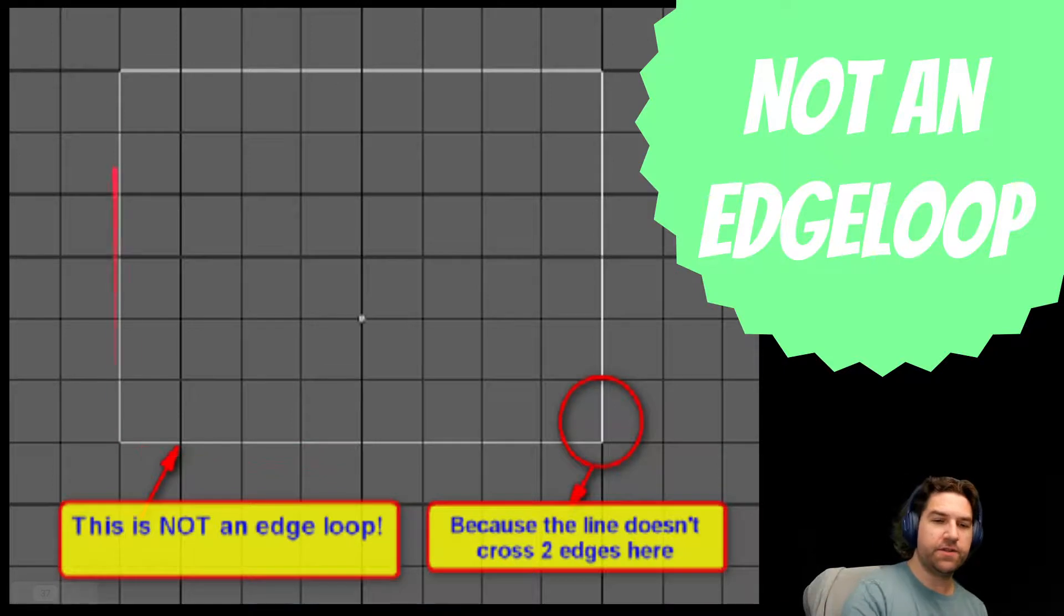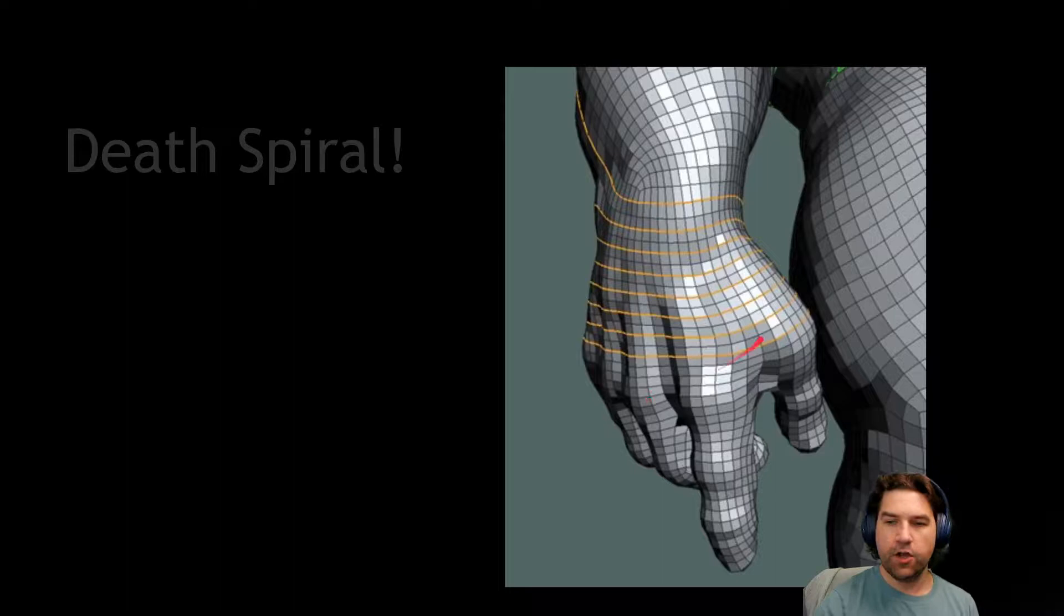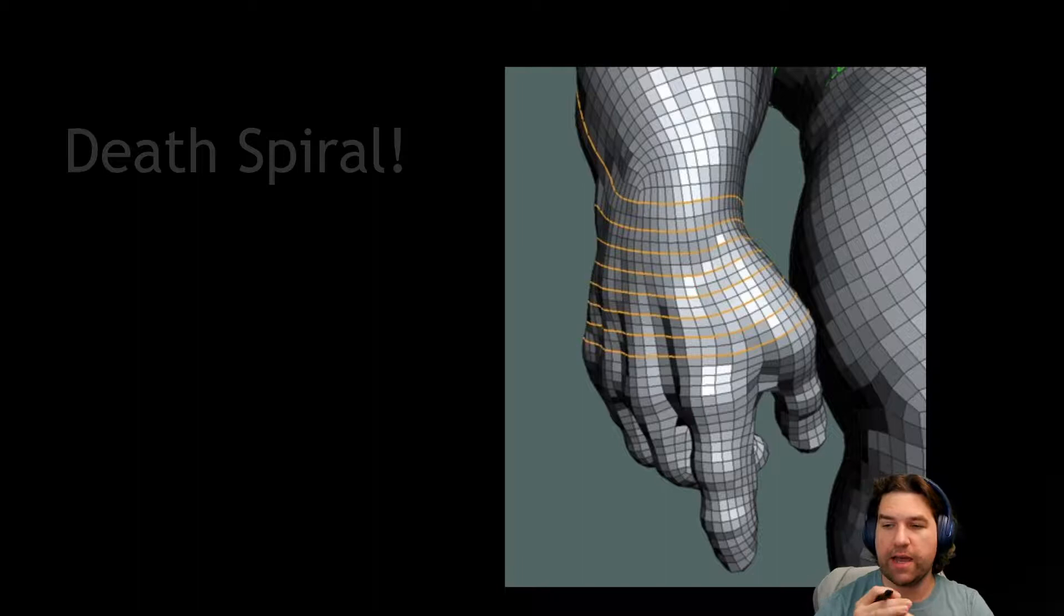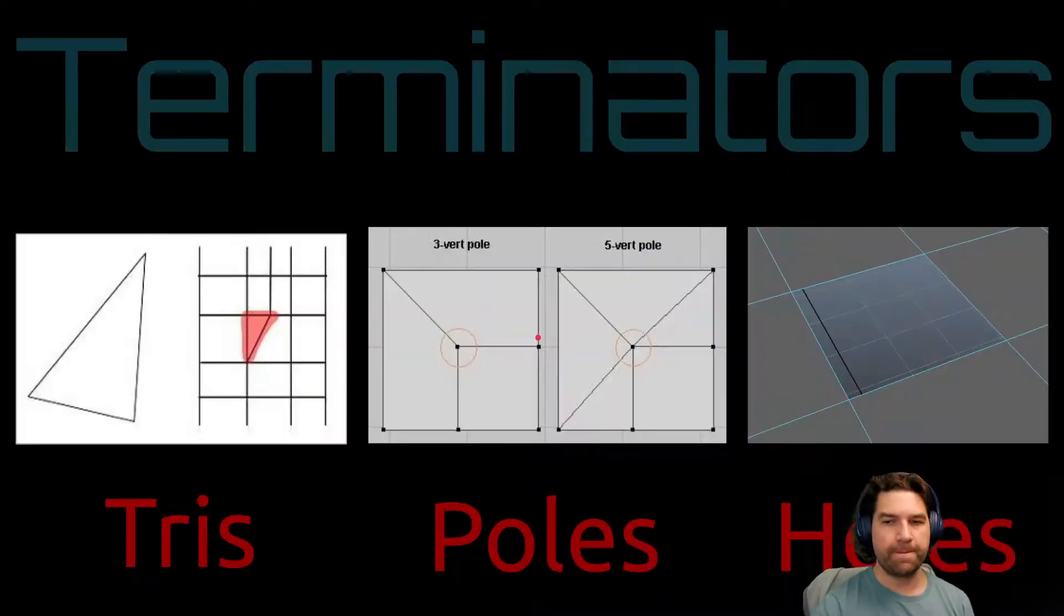These examples, not an edge loop because as you can see, it's kind of turning a corner here. We also want to avoid what's called a spiral. A spiral is anytime a loop runs its way around and down. We want our loops to connect back on themselves. This is a feature sometimes of auto re-topology tools—they create a lot of spirals. And spirals are really bad because it's also hard for the computer to work with and it's really tough to unwrap.